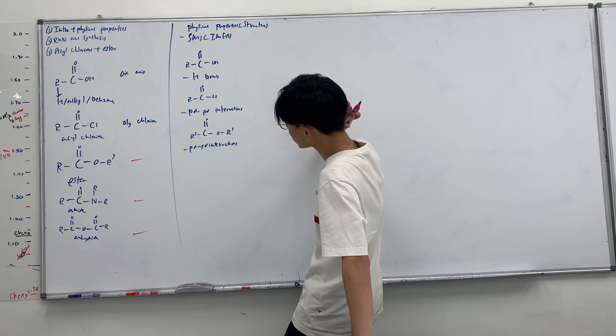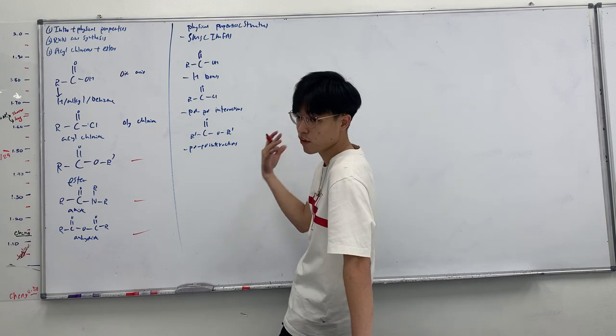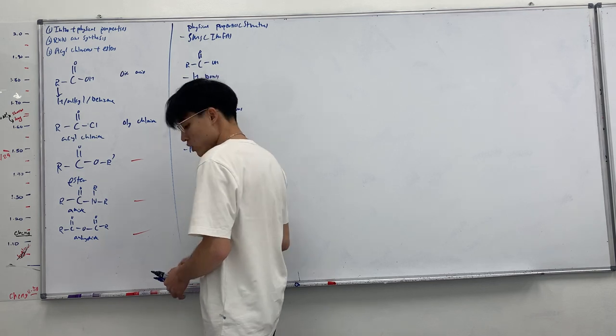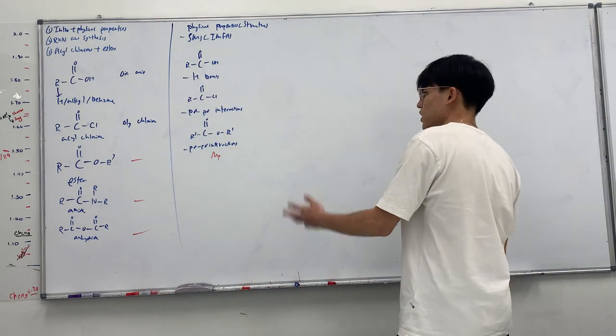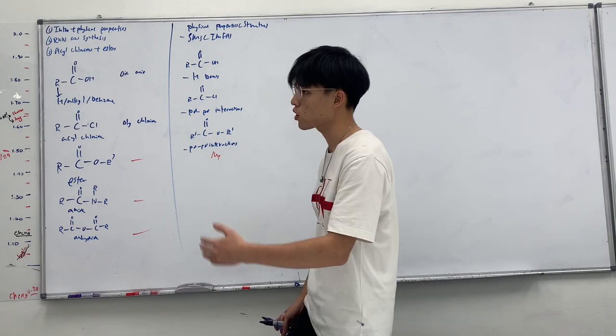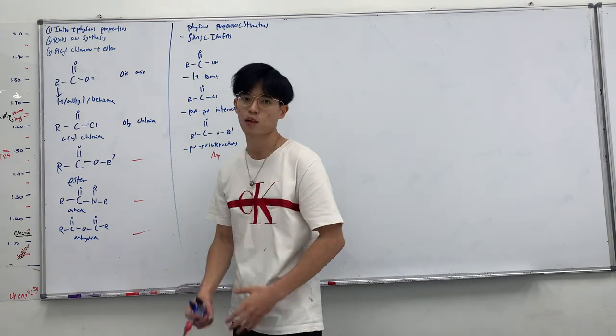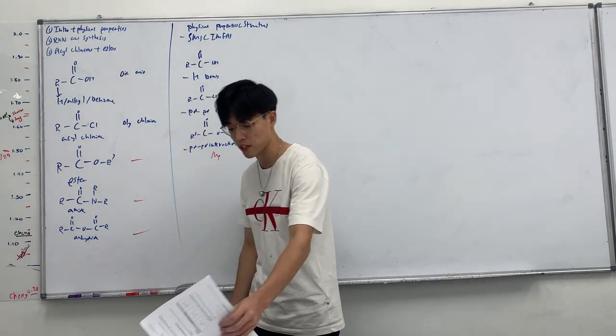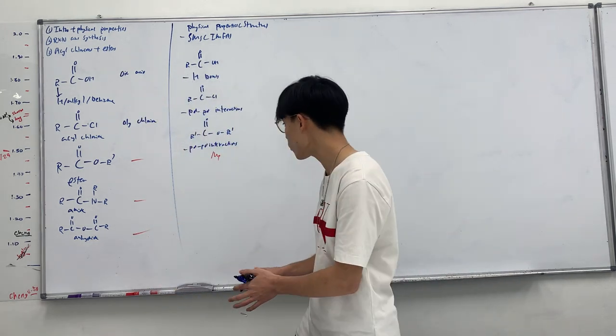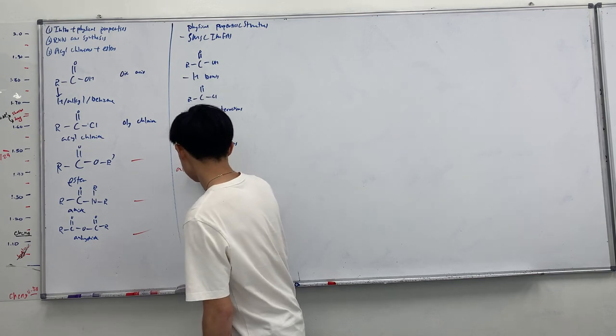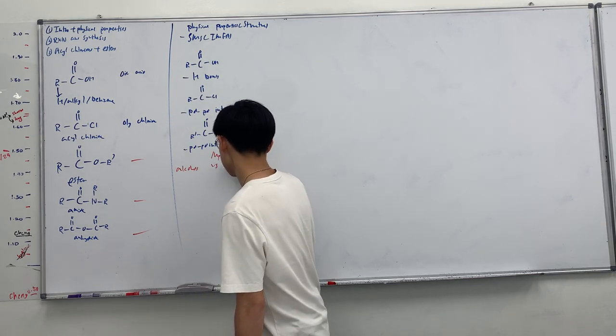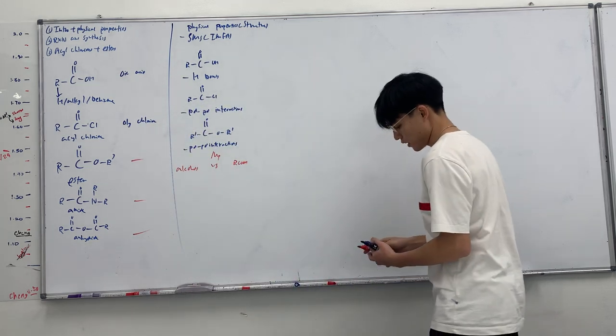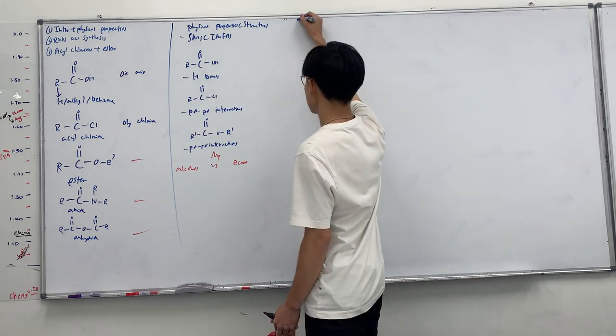Let's say I draw a carboxylic acid. I need you to tell me the interactions in carboxylic acid. It will be hydrogen bonds, correct? How about acyl chloride? This guy will have PdPd interactions, because there's no hydrogen bonded to F, O, or N. And amide and ester also have only PdPd interactions.